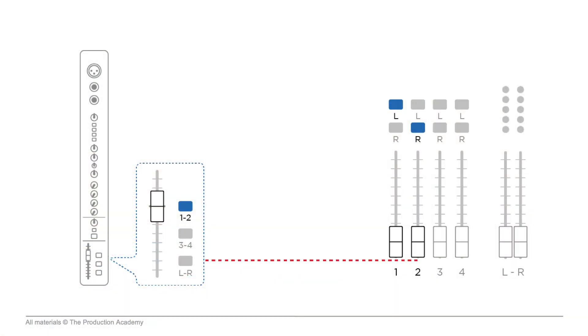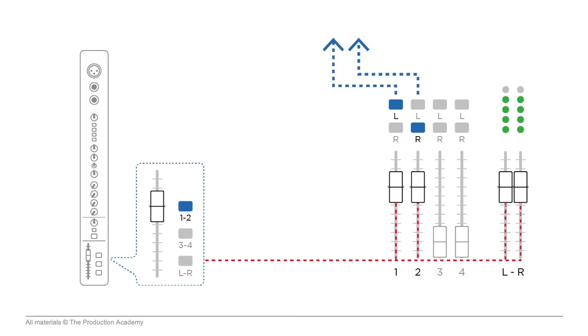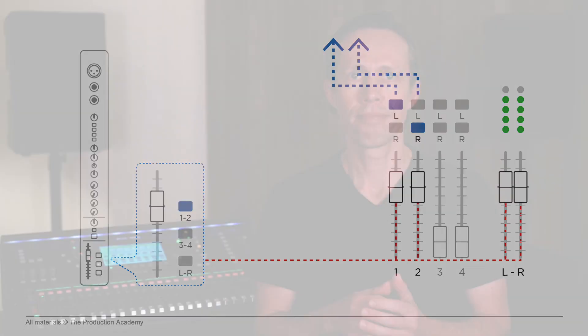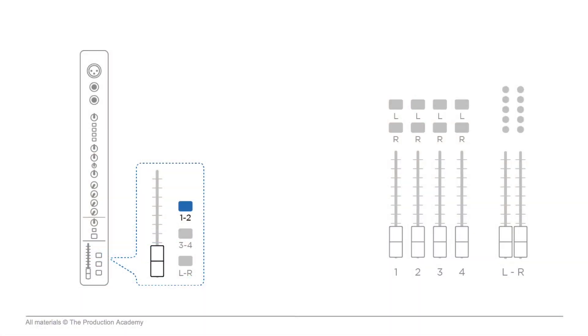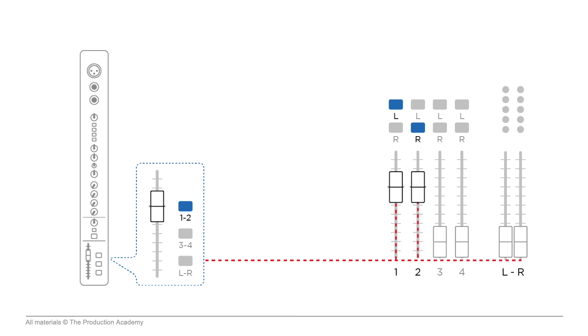For example, we can route channels to a group. This sends the selected channels to a subgroup, which can then be sent onto the main mix, or routed somewhere else completely like a separate physical output of the console. We do need to remember that each fader along the way is part of the signal chain and needs to be assigned correctly. So if we assign the channel to groups 1 and 2, we would then need to assign groups 1 and 2 to left-right, and the channel fader must be up as well as the group faders for the signal to reach the main outputs.